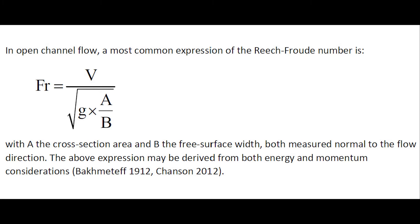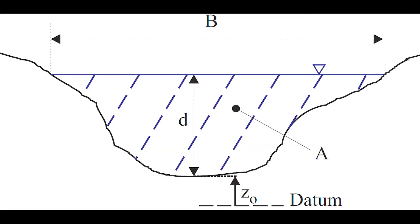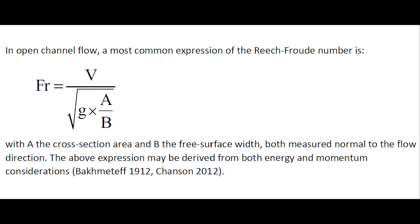In open-channel flow, a most common expression of the Reich-Froude number is the ratio of the velocity divided by the square root of g times A over B, with A as a cross-section area and B as the free surface width. This expression may be derived from both energy and momentum considerations.